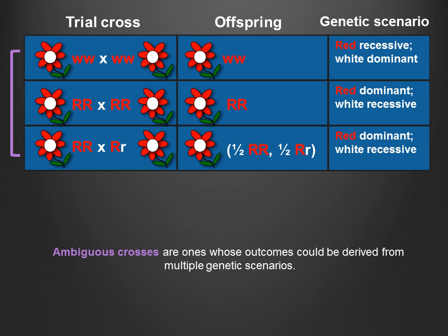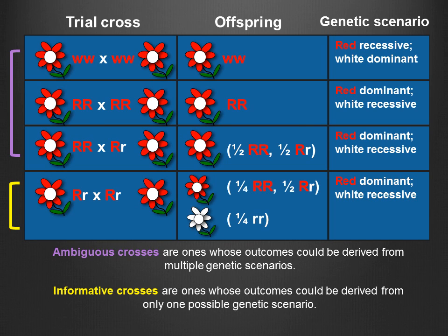When we summarize the results in table form, you can immediately see that trial crosses in which the parents and offspring all have the same phenotype are ambiguous crosses. All three of those trial crosses have the same result — all red offspring — but this result can be attributed to both genetic scenarios being tested. Therefore, these trial crosses do not reveal information about the dominance relationship. On the other hand, the trial cross in which some offspring do not share the parents' phenotype is an informative cross, and its result can be attributed to only one genetic scenario: the red allele is dominant.